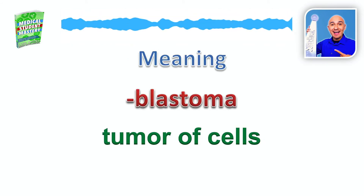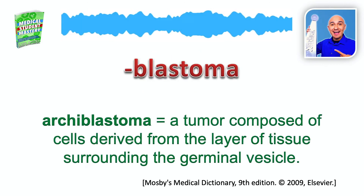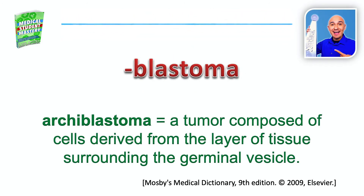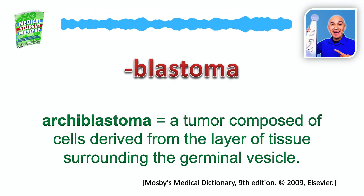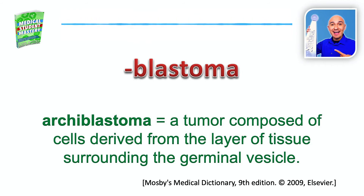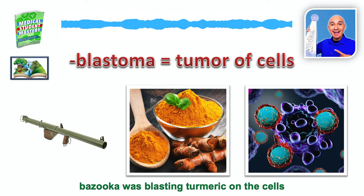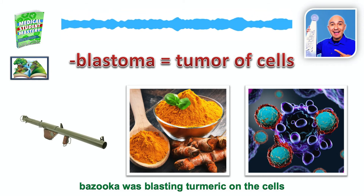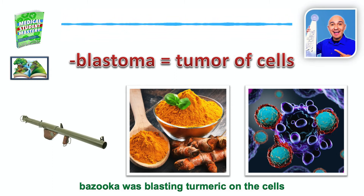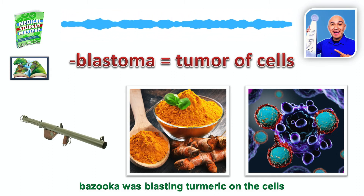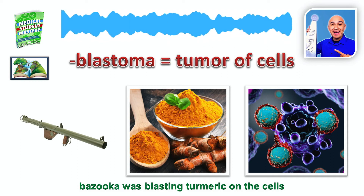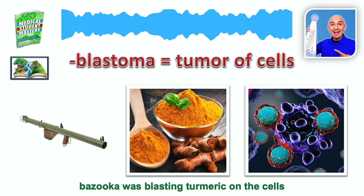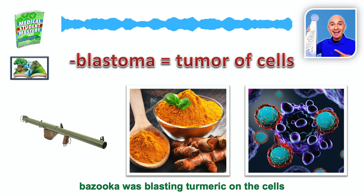The next suffix is -blastoma, and that means tumor of cells. My word used for that would be archiblastoma, which means a tumor composed of cells derived from the layer of tissue surrounding the germinal vesicle. For -blastoma, I would picture a bazooka gun. And for tumor of cells, I would picture turmeric on cells — turmeric for tumor. So the bazooka was blasting turmeric, that orangey powder, onto a lot of different cells.